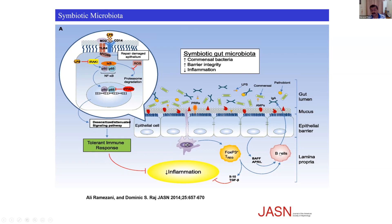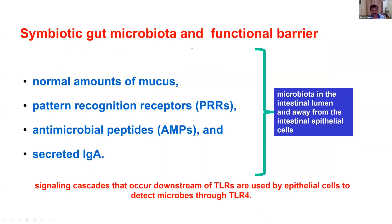The B cells, activated with BAFFR and PAMPs, secrete IgA rather than IgG. In comparison, in a dysbiotic gut microbiota, you would have more IgG rather than IgA. These layers are very much tight in a symbiotic gut microbiota. To recapitulate: in symbiotic gut microbiota with a functional barrier, there is normally adequate mucus, pattern recognition receptors, anti-microbial peptides, and IgA.